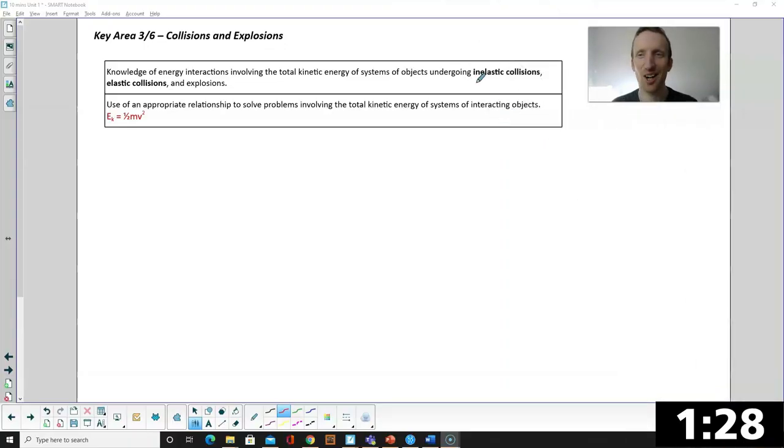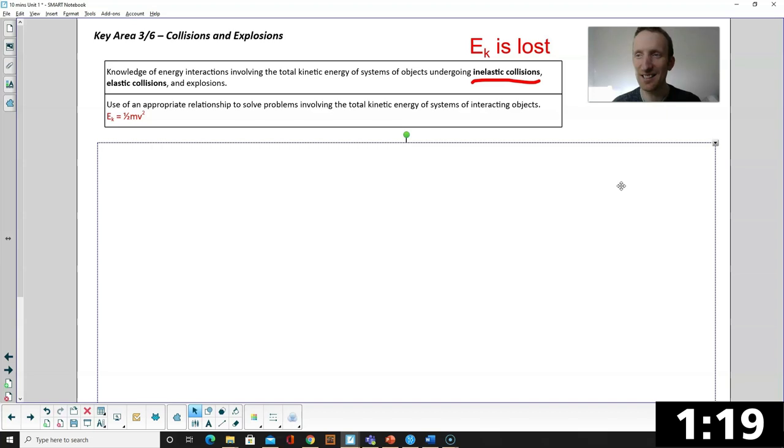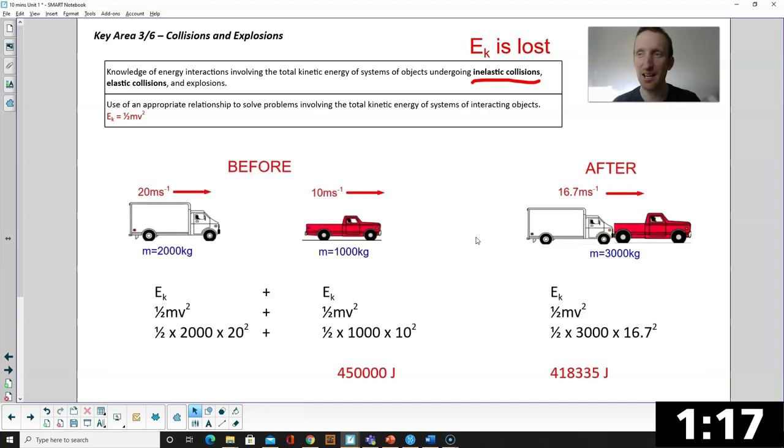And collisions are classed as either inelastic or elastic. Inelastic collisions are ones where kinetic energy is lost, elastic is where kinetic energy is conserved. To solve problems with this, it's exactly the same method, you look before and after, but this time you're adding up the kinetic energies, and you see are they equal. This is the kinetic energy before, kinetic energy after, they are not the same, so therefore it's an inelastic collision.